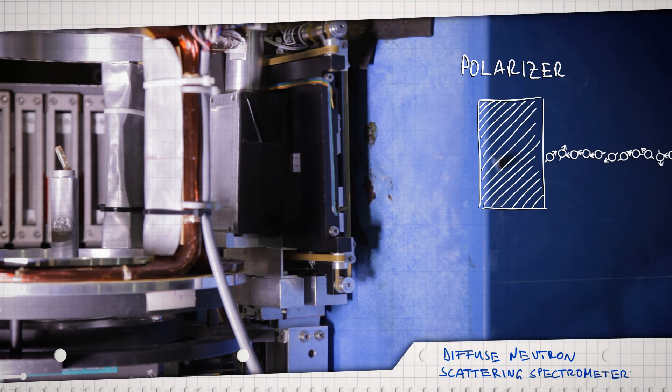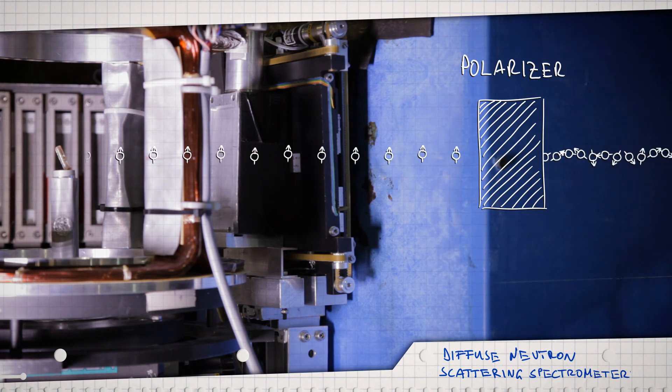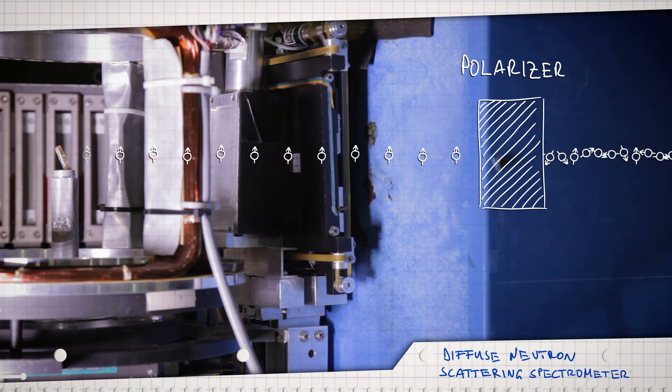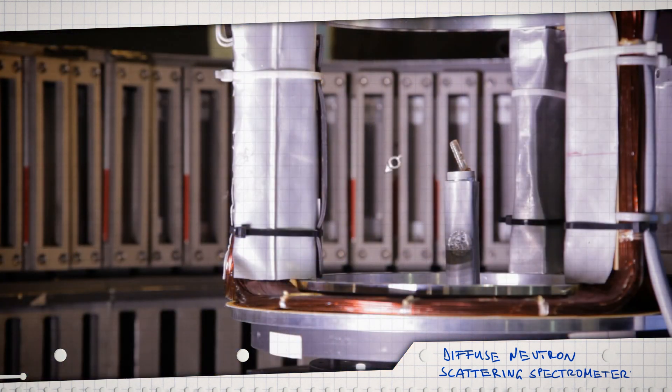First though, the neutrons must go through a polarizer and only those with a certain spin orientation are able to pass through it. Inside, the detectors can record the spin direction of the scattered neutrons.